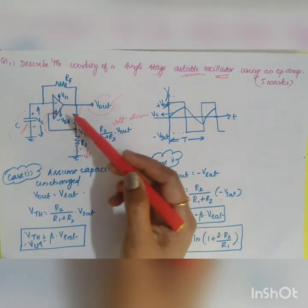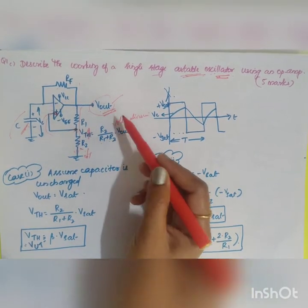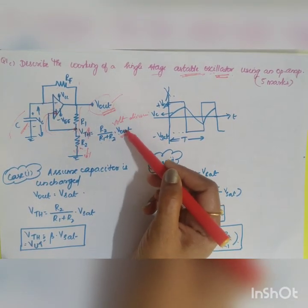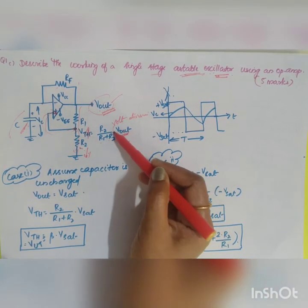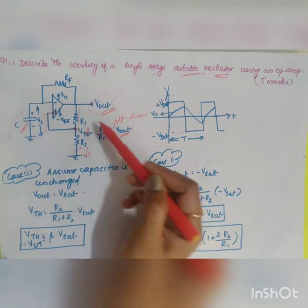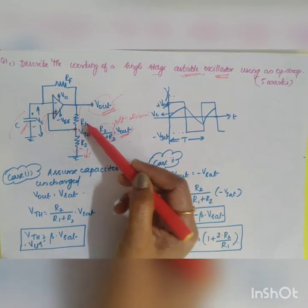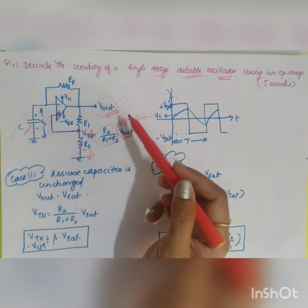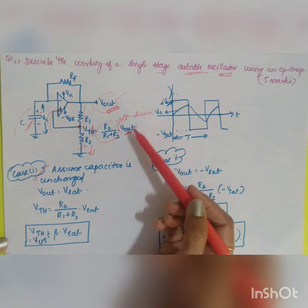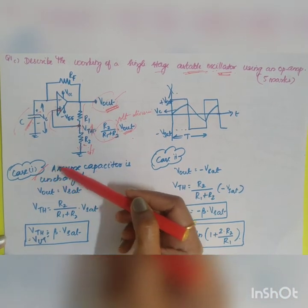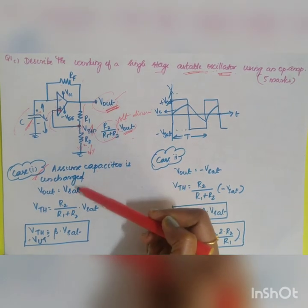Once the capacitor reaches this value, Vout will be having two conditions. It will be either plus Vsat or minus Vsat. When it is plus Vsat, once it reaches plus Vsat into R2 divided by R1 plus R2, it will switch the output from plus Vsat to minus Vsat. Let us take the first case. In the first case, you are assuming the capacitor is uncharged and your Vout is equal to plus Vsat.